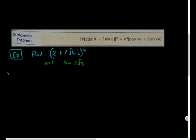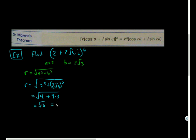I have that a is 2, and b is 2√3. So to get this into polar form, I will have r equal to the square root of a² + b². So r equals the square root of 2² + (2√3)², or square root of 4 + 4×3, that's the square root of 16, which is 4.